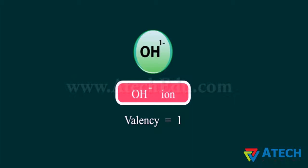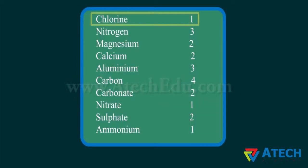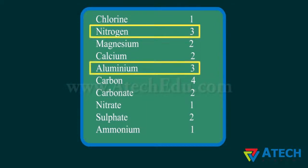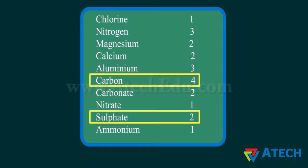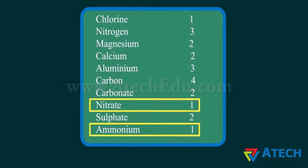Valency of chlorine is 1; magnesium and calcium have valency 2; nitrogen and aluminium have valency 3; carbon has valency 4. Among ions, carbonate and sulphate have valency 2, while nitrate and ammonium ions have valency 1.